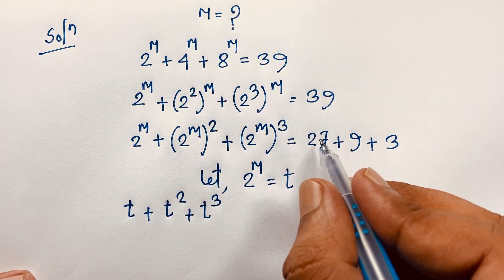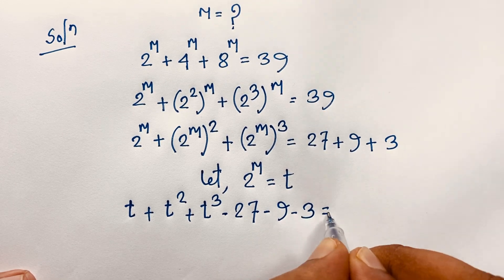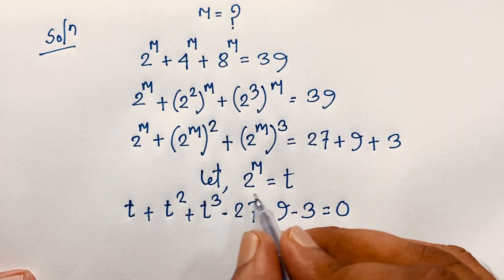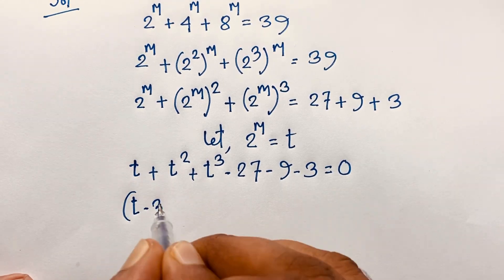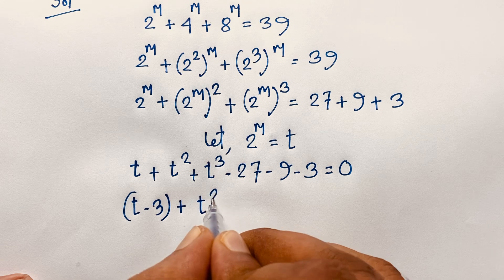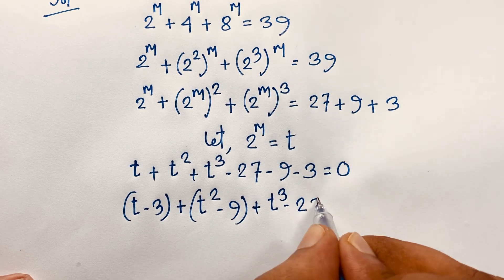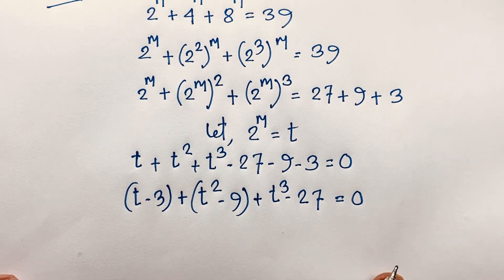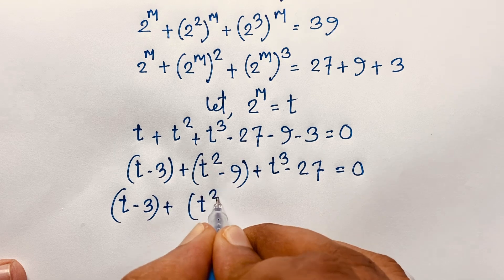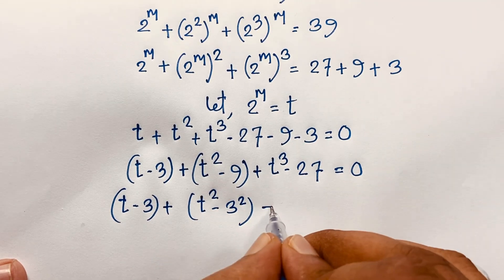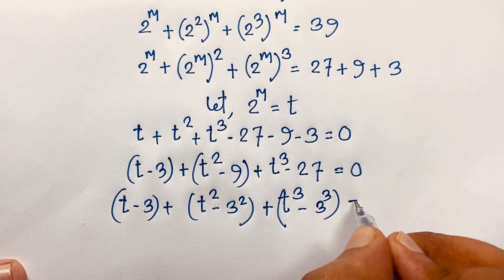If I move 27, 9, and 3 to the left side, they become negative: t plus t squared plus t cubed minus 27 minus 9 minus 3 equals 0. I take the negative 3 out. Grouping terms, we get t cubed minus 27, which factors as a difference of cubes. So t cubed minus 27 equals 0 gives us t cubed minus 3 cubed.